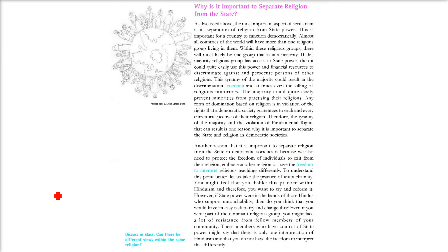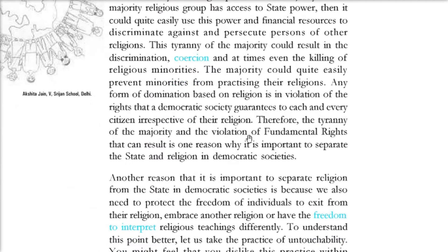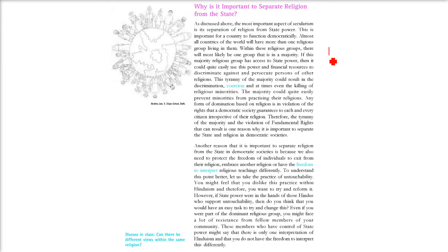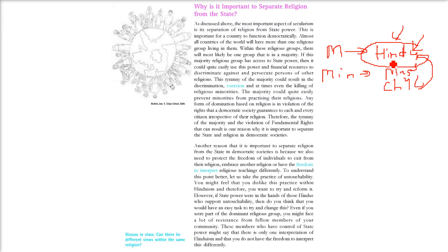Why is it important to separate religion from the state? In India, the majority follows Hindu Dharma, while minorities include Muslims, Christians, Buddhists, etc. If the state promotes a certain religion, or the majority has one religion, there is always a possibility that religious minorities are stopped, discriminated against, and marginalized on the basis of religion, while the majority gets all the powers and benefits.